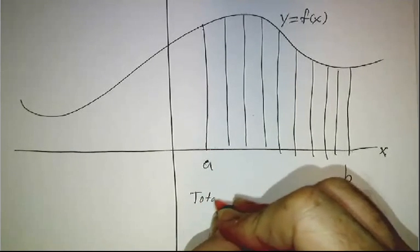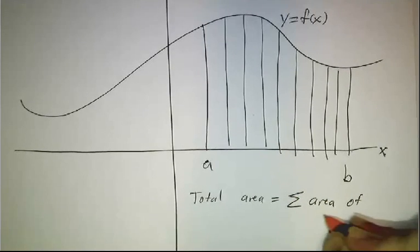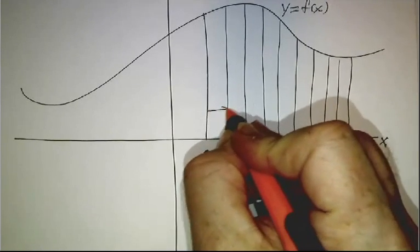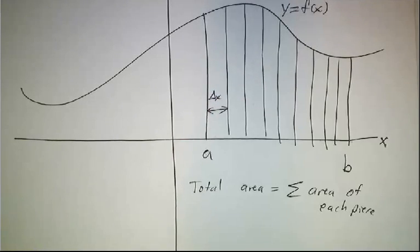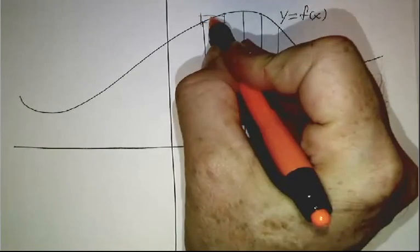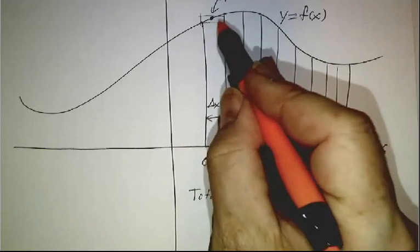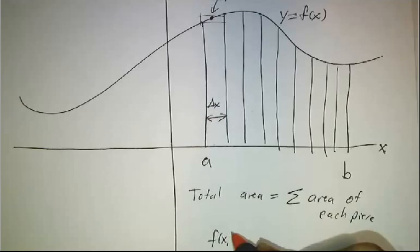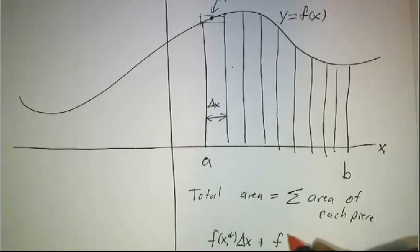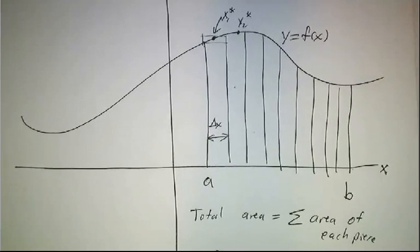And then you say the total area is the sum of the area of each piece. And then you say, what's the area of each piece? Well, the width of each piece we call delta x. And then we have to figure out what the height of each piece is. Well, we could take this height or we could take this height. We pick some point in the middle. Let's call it x1 star. And we say the area of this piece is f of x1 star times delta x. So it's the height times the width. And then you get f of x2 star times delta x where this is x2 star and so on.